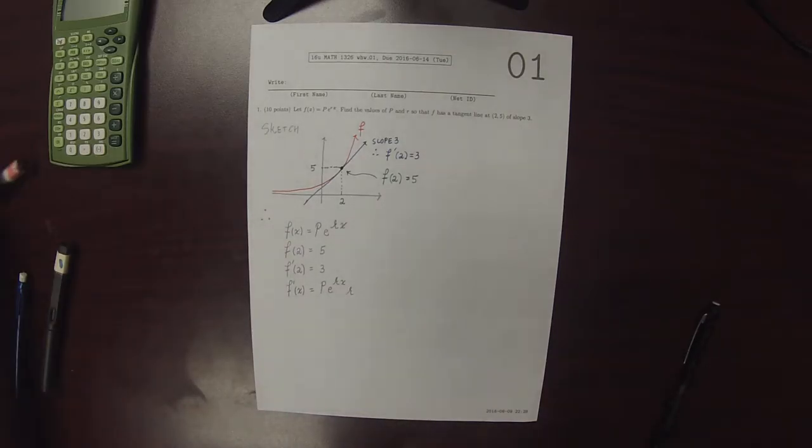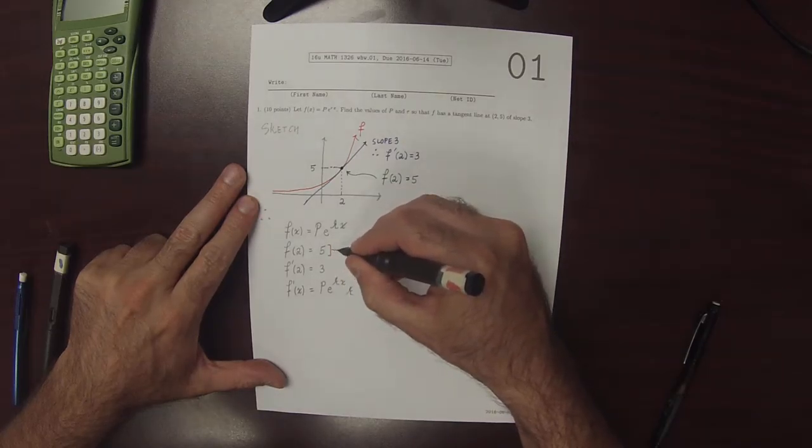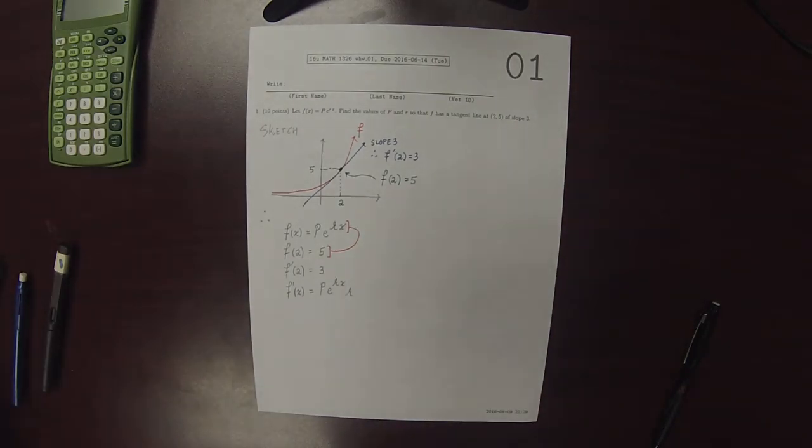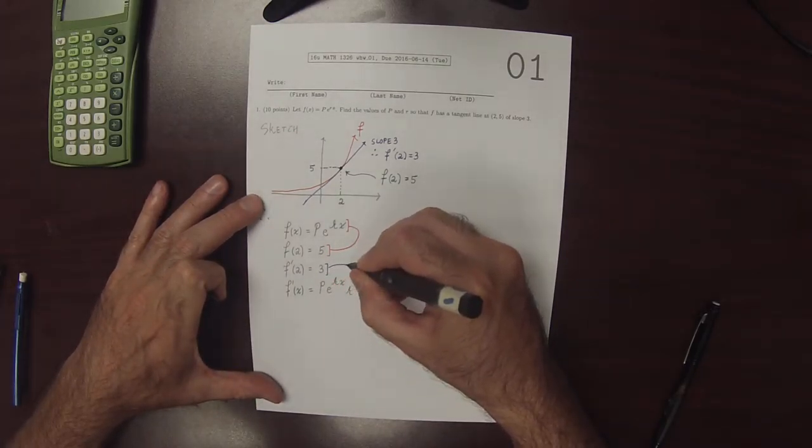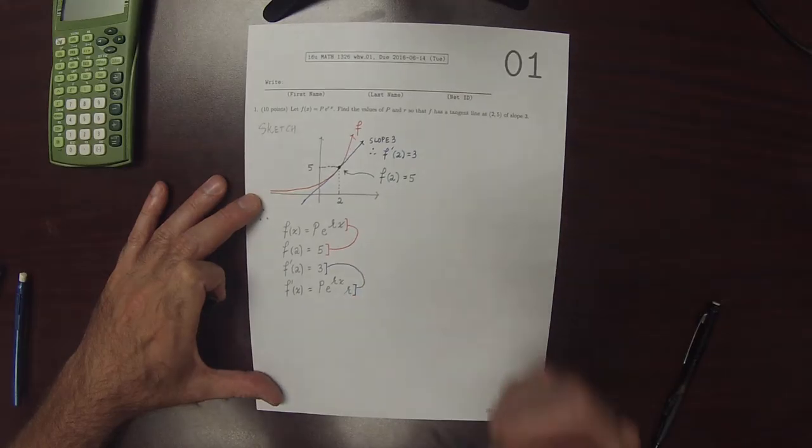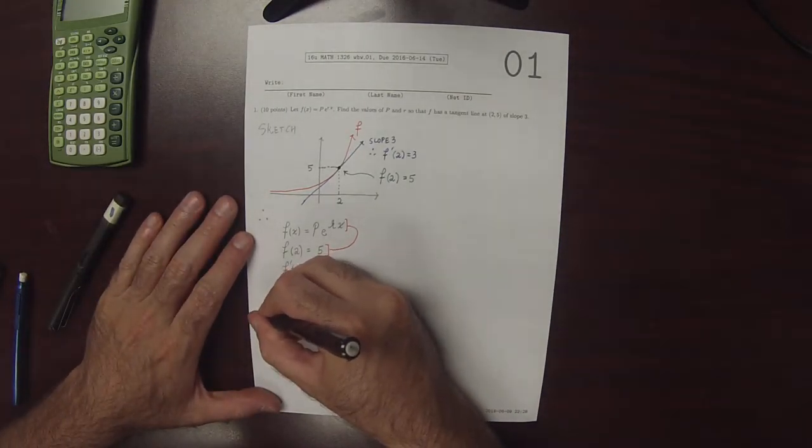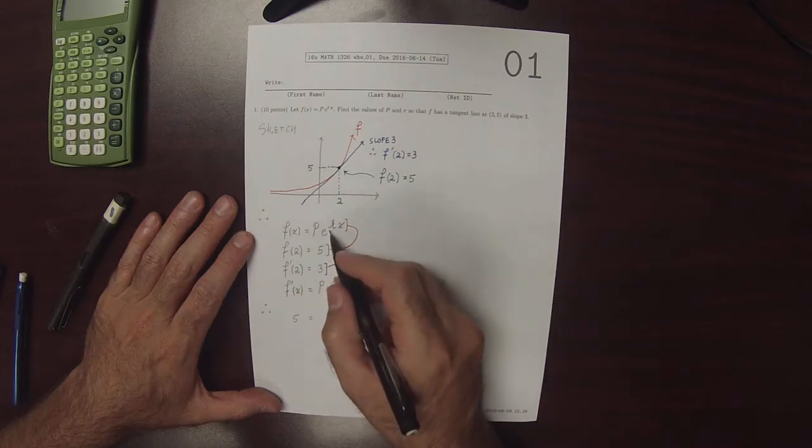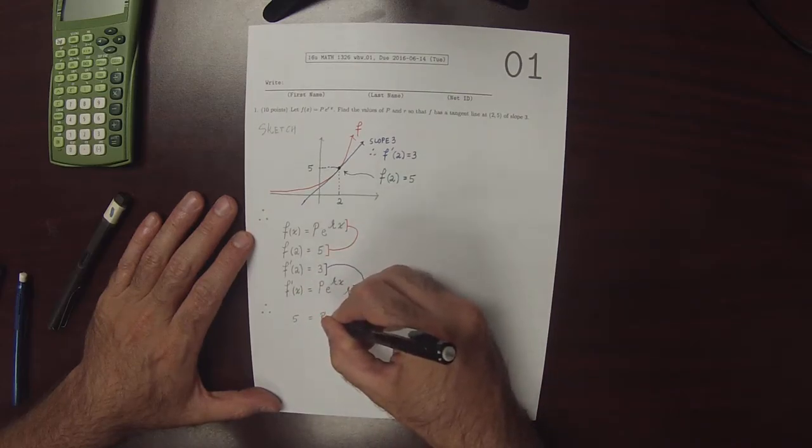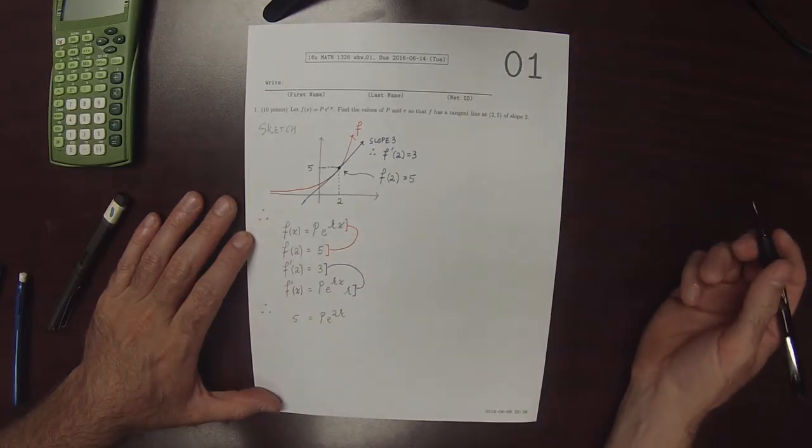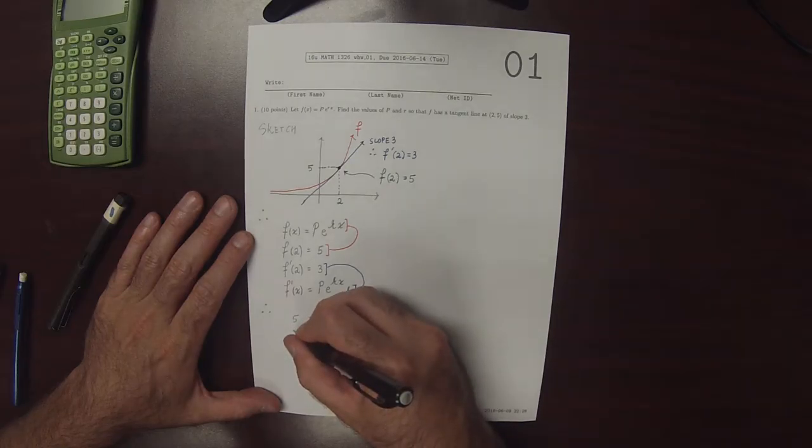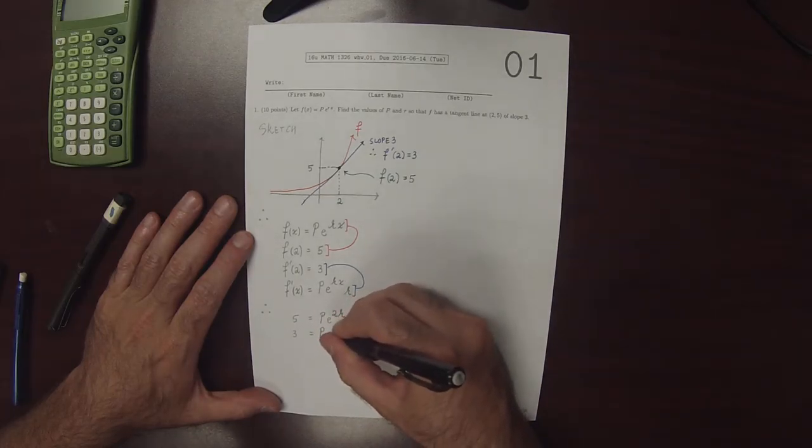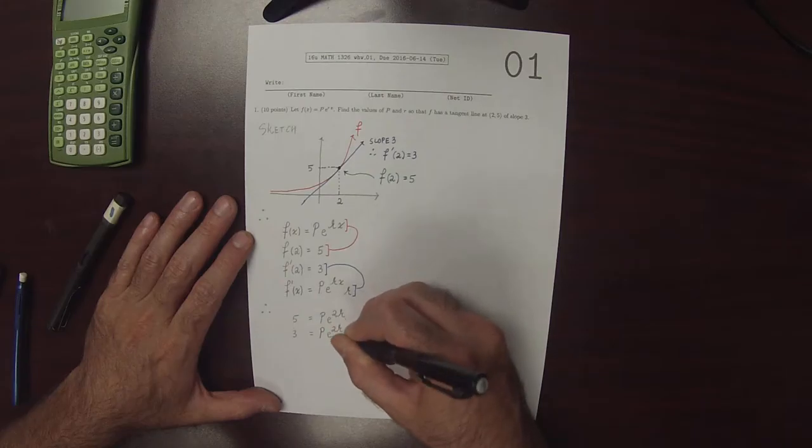So now let's use this piece of information and plug it into here. And let's use this piece of information and plug it into here. So 5 is what you get when you plug in 2 into this. So that's p e to 2r. And 3 is what you get when you plug 2 into this for x. So that's p e to 2r multiplied by r.